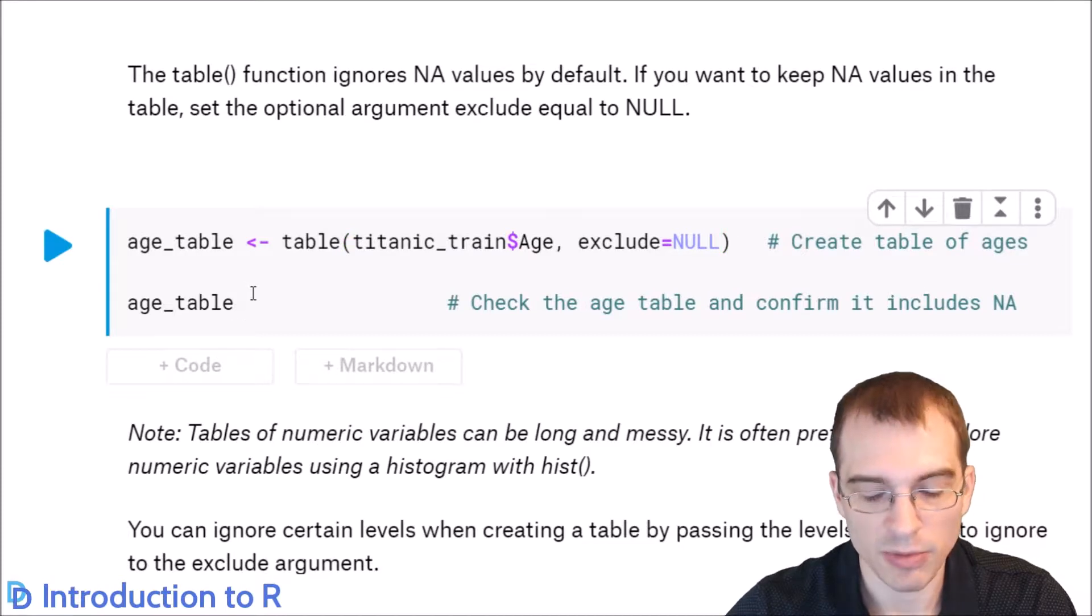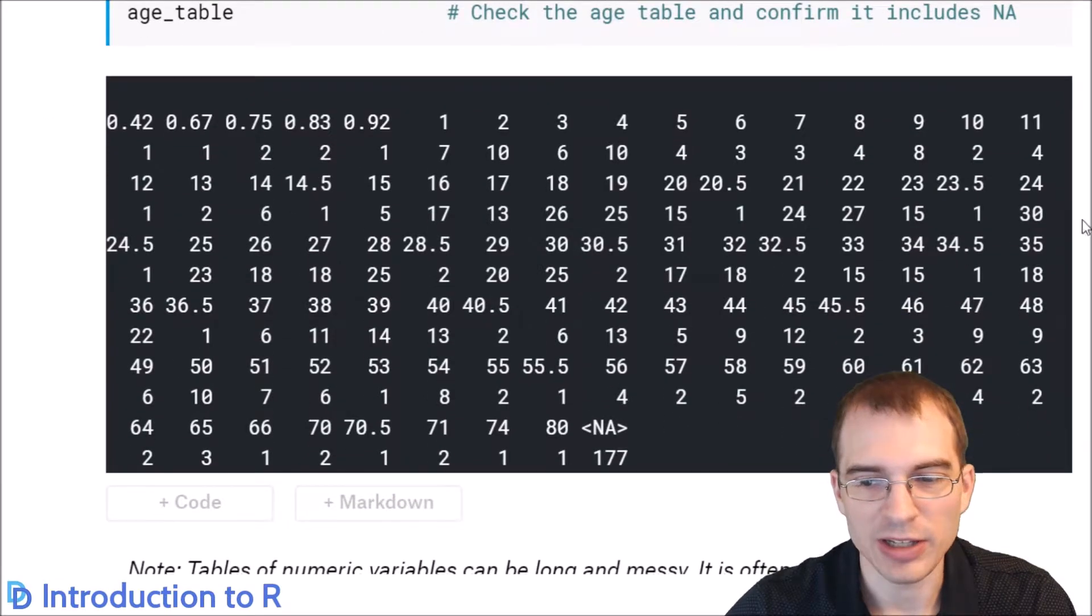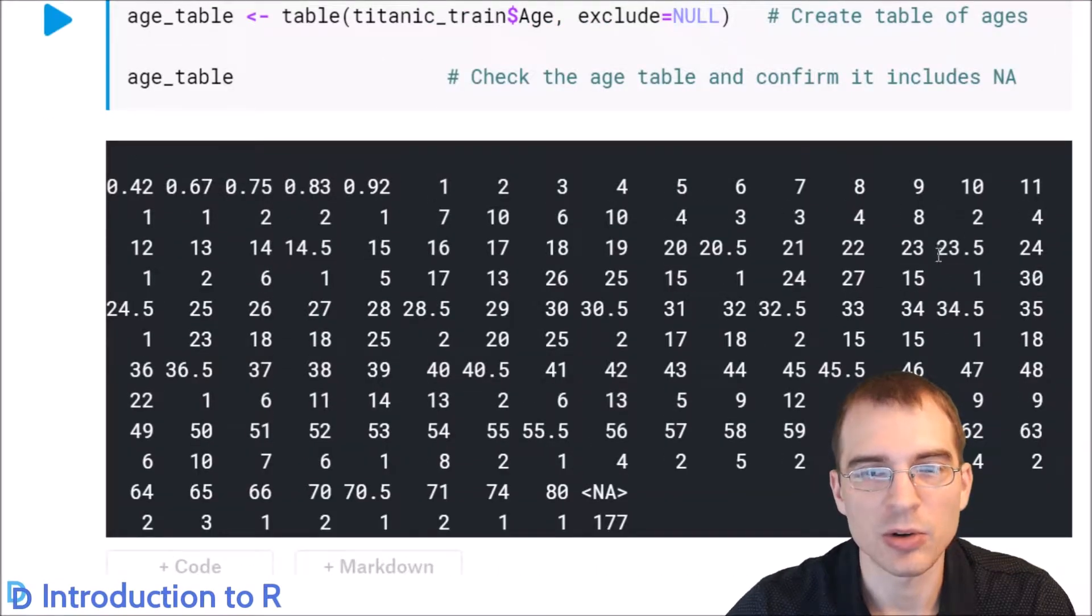From lesson 13, we know that the age variable in particular in this dataset has quite a few missing values. So we're going to make a table of age, but we're going to make sure that the NAs are not removed. And this will allow us to see how many NA values there are by inspecting the table. Let's run this. And you can see that running a table on a variable that is not categorical can lead to many, many entries in a table. This is not something you generally want to do. But because there aren't that many unique ages, we can at least fit it all on one screen. And it does show us that, indeed, the 177 people where the age was not known or missing is included as an NA entry in the table.